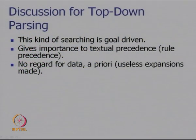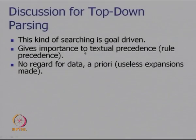Proceeding further, we can reiterate: top-down parsing is a kind of search that is goal driven. It gives importance to rule precedence with no regard for data a priori, and useless expansions can come. The rule NP goes to DT N was textually before NP goes to N, so that rule was invoked first and NP goes to N was held in abeyance in the back-up state.